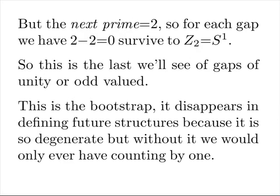But the next prime equals two, so for each gap we have two minus two equals zero copies survive to Z sub two or S one. So this is the last we will see of gaps of unity or odd valued. This is the bootstrap. It disappears in defining future structures because it is so degenerate, but without it we would only ever have counting by one.